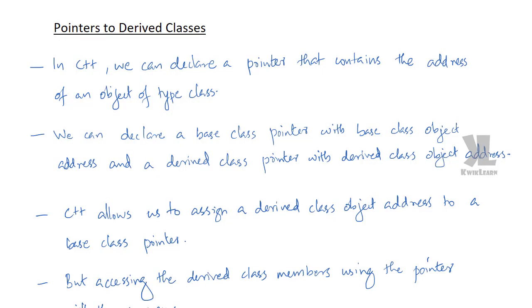Hi, this is Vishen. In this session we will discuss pointers to derived classes. In C++, we can declare a pointer that contains the address of an object of type class.